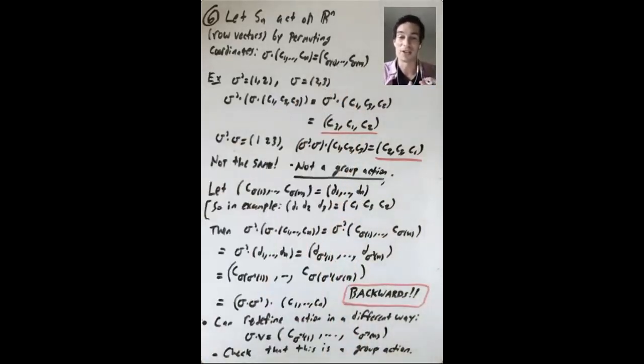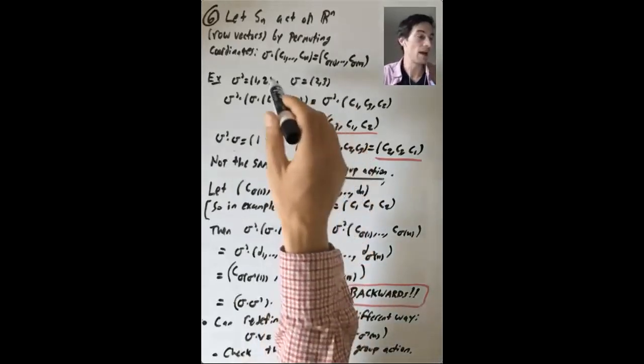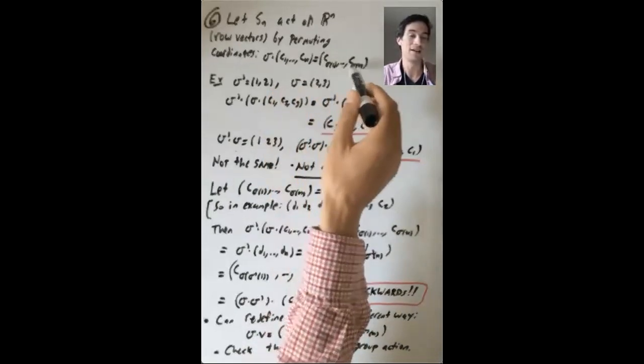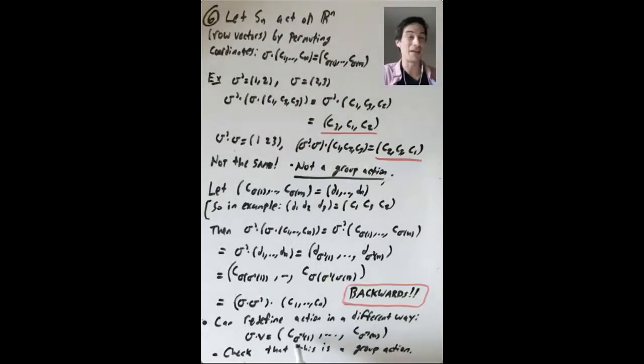So what's really going on here is this type of permutation of coordinates is more natural as a right action instead of a left action. You can redefine this action in a different way, where the way that sigma acts on your vector, (c1 up through cn), is not by applying sigma to each of the indices, but applying sigma inverse to each of the indices. So sigma acting on (c1 up through cn) should be (c sigma inverse of 1 up to c sigma inverse of n). So it's a good exercise working with the definitions to check that this actually does give you a left group action.